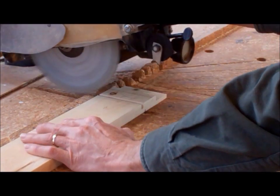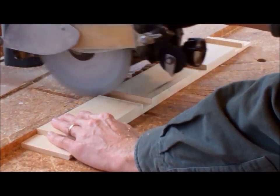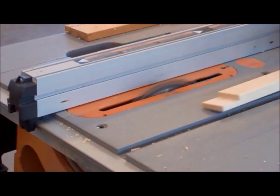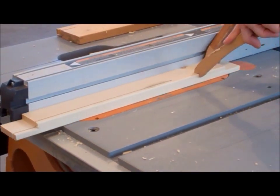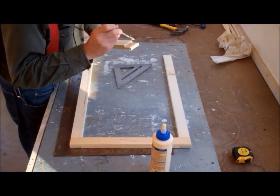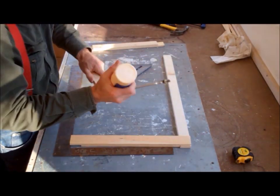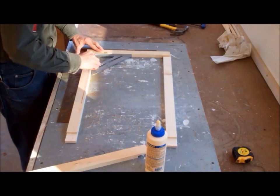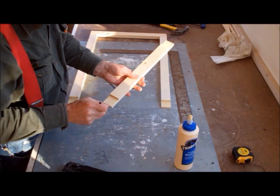Next we milled dados on the two boards that would be used for the front and back vertical frames. Then cut the 1x4s to the required 1 1/2 inch width. On the bench the frames were assembled by gluing and nailing.